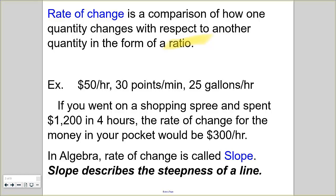Some examples of that would be like $50 per hour, so that's the ratio of dollars to hours, or 30 points per minute, or 25 gallons per hour.